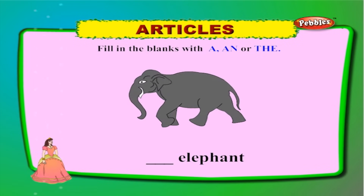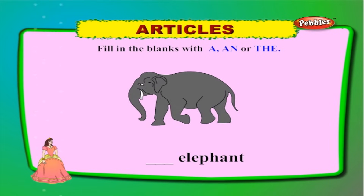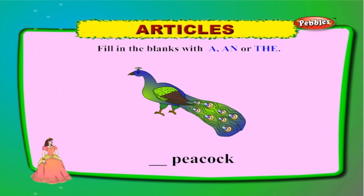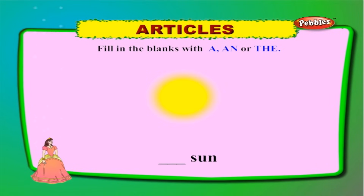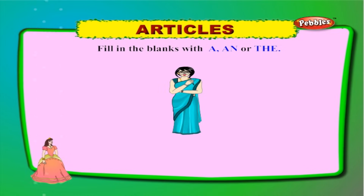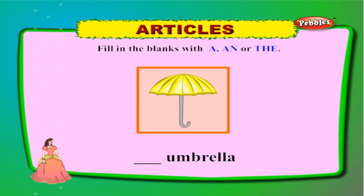Now let us fill in the blanks with 'a', 'an', or 'the'. 'Elephant' — starts with 'E', a vowel, so: 'an elephant'. 'Peacock' — starts with 'P', a consonant, so: 'a peacock'. 'Sun' — starts with 'S', a consonant, but we use 'the' because we mean a particular thing: 'the sun'. 'Teacher' — starts with 'T', a consonant, so: 'a teacher'. 'Umbrella' — starts with 'U', a vowel, so: 'an umbrella'.